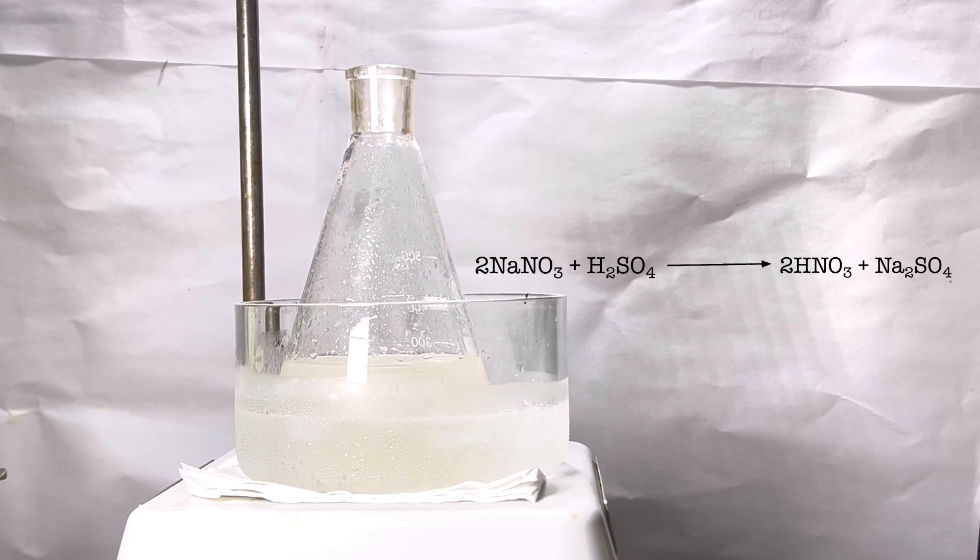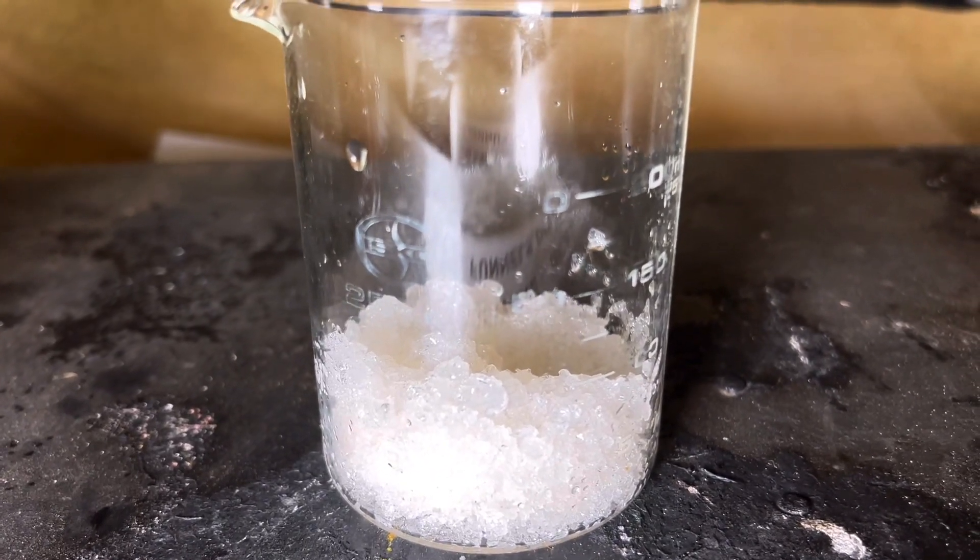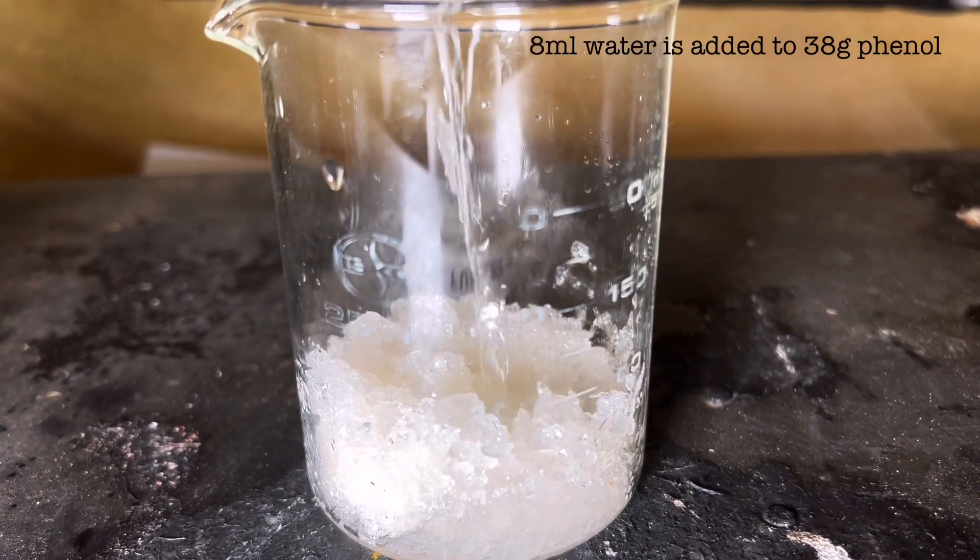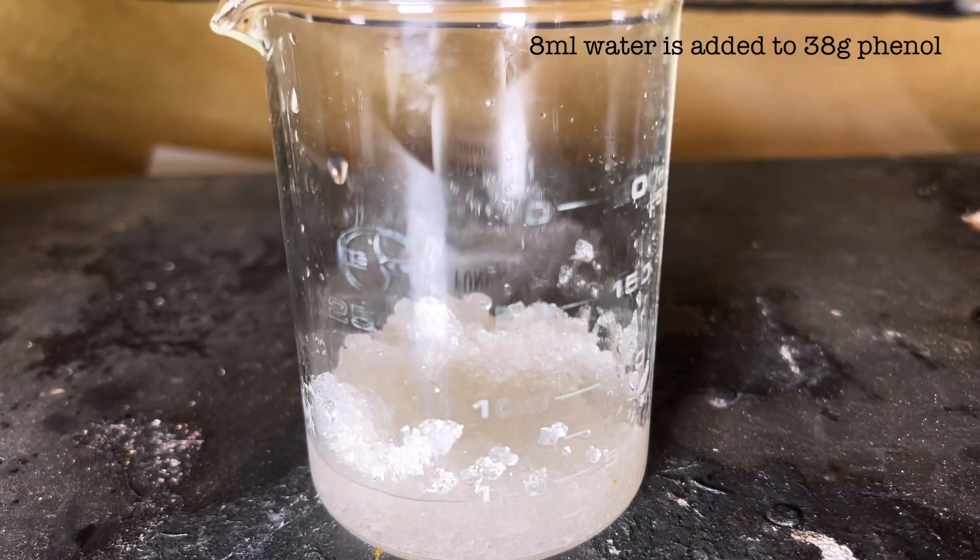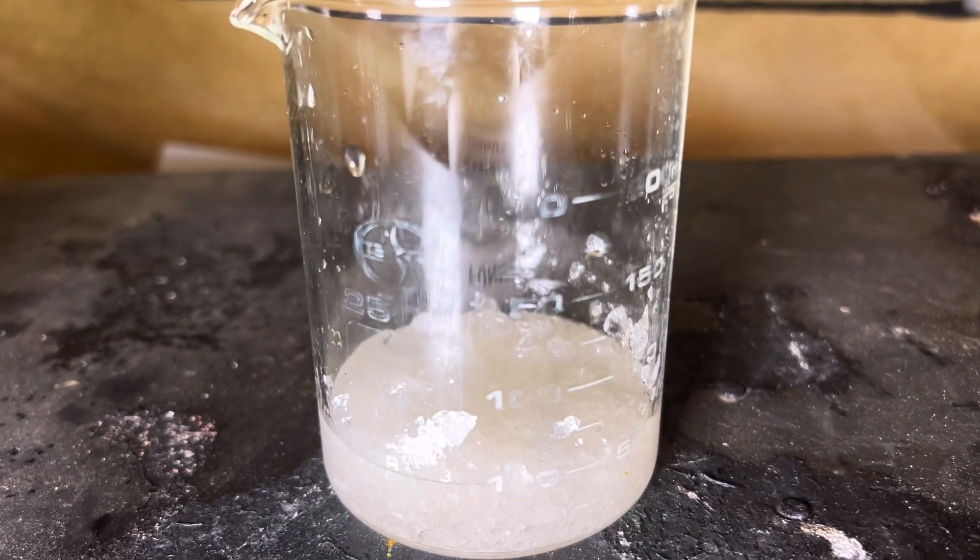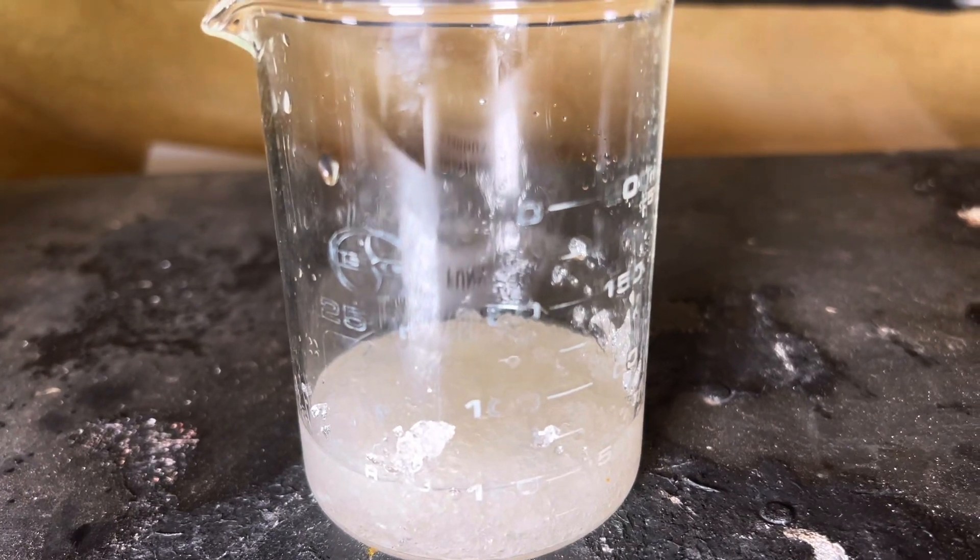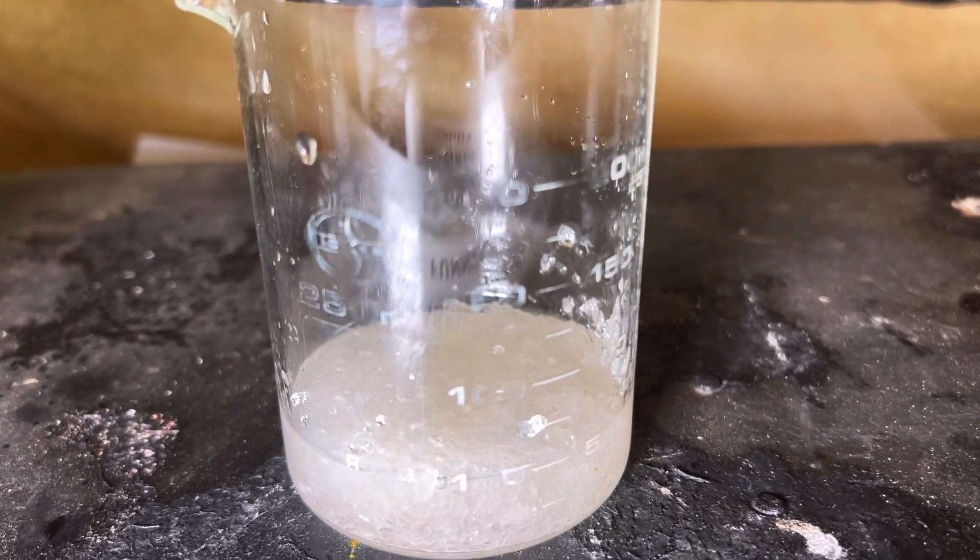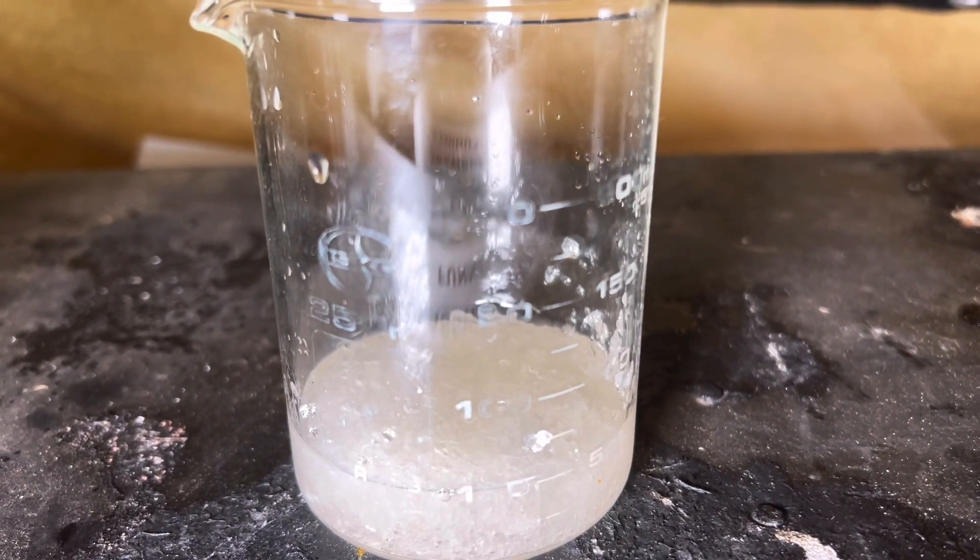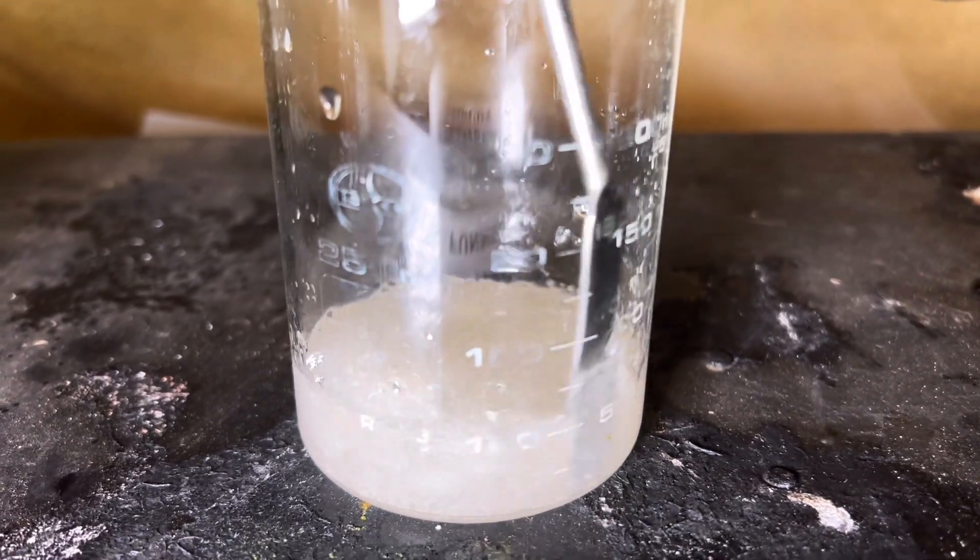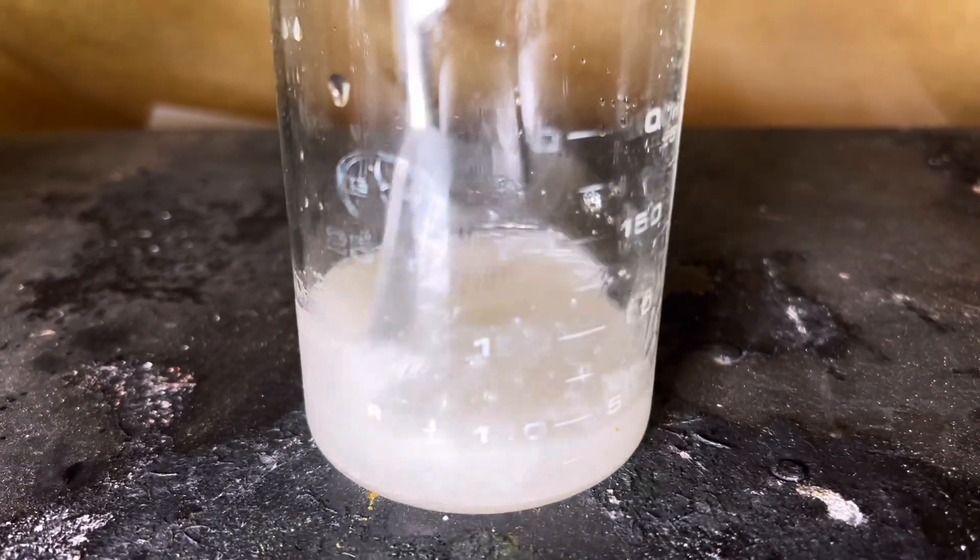While the sodium nitrate is dissolving in the acid and the flask is being cooled down, we will get ready with the phenol. 38 grams of phenol is taken in a 250 milliliter beaker and 8 milliliters of water was added. Most of the phenol would liquefy and dissolve in water. If anything is left out, gentle heat could be applied so that everything dissolves and we get a clear solution.